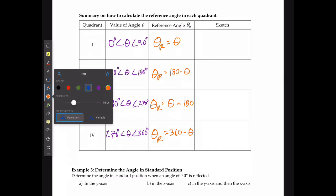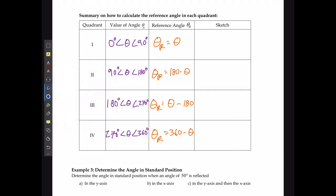If solving for the original angle given the reference angle: in quadrant one, the original angle equals the reference angle. In quadrant two, the original angle equals 180 minus the reference angle. In quadrant three, the original angle equals 180 plus the reference angle. And in quadrant four, the original angle equals 360 minus the reference angle.